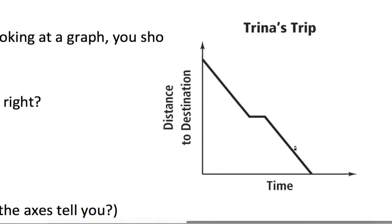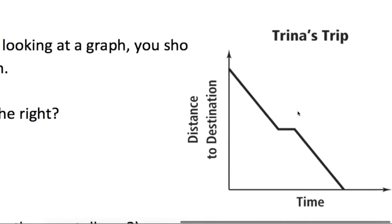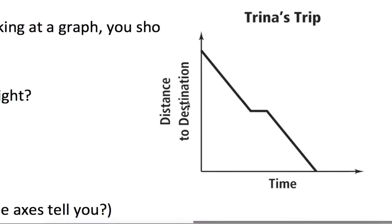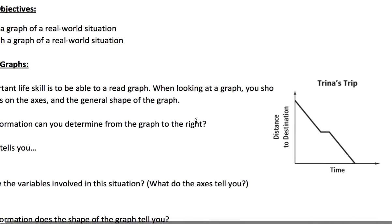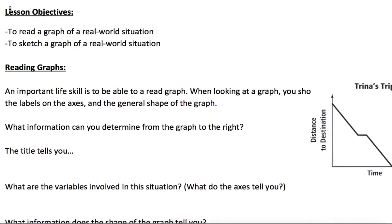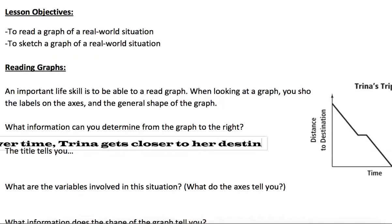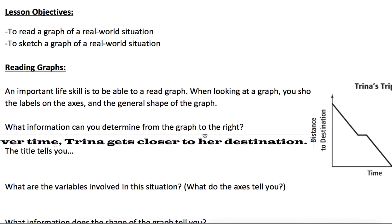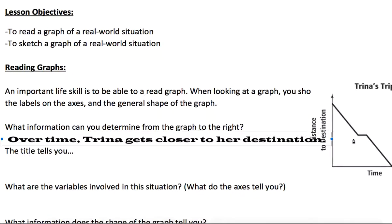Let's take a look at this. We have Trina's trip on the side, this is measuring the distance to the destination and it's also measuring time. So the distance to the destination, ideally over time you want to get closer and closer to wherever you're going. We could say that over time Trina gets closer to her destination.